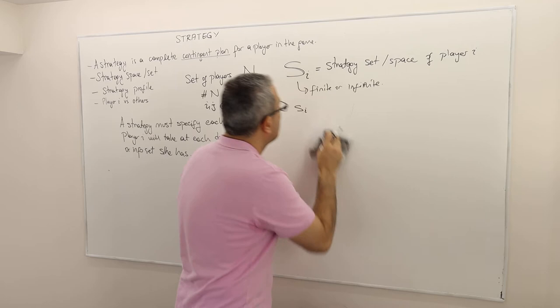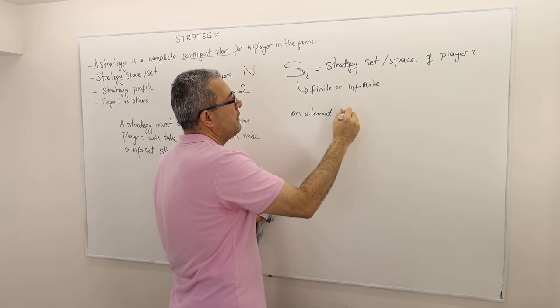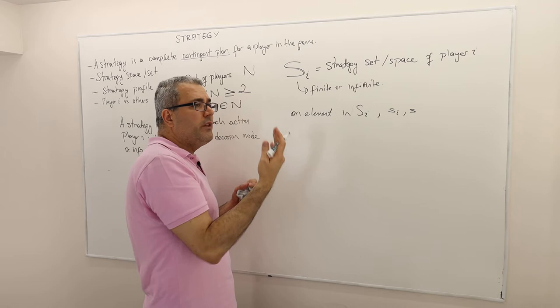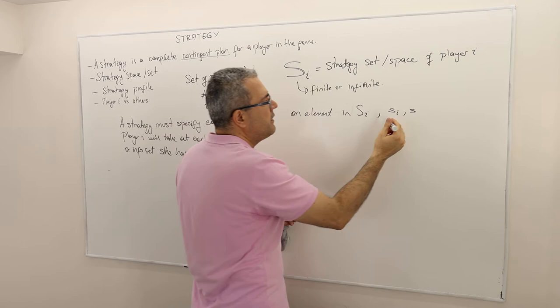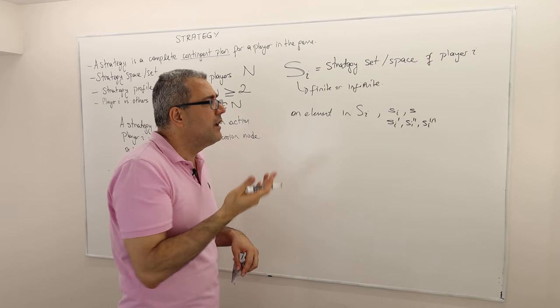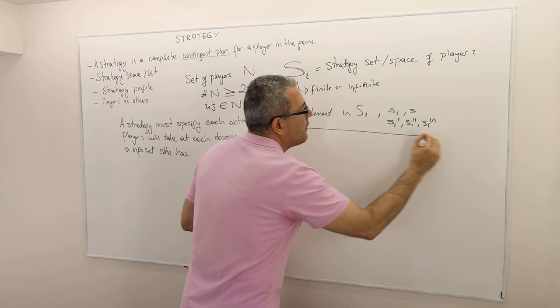Usually, we denote the strategy, an element, and let me call it, an element in S_i is usually denoted by small s_i. Or sometimes, I just drop i and just call it s. If you want to say two different strategies, how do we denote this? We don't use A, B, C, D. We denote it by s_i prime, s_i double prime, s_i triple prime, if we need. So if we need another notation, sometimes maybe t_i, but we usually go with s. Very good.